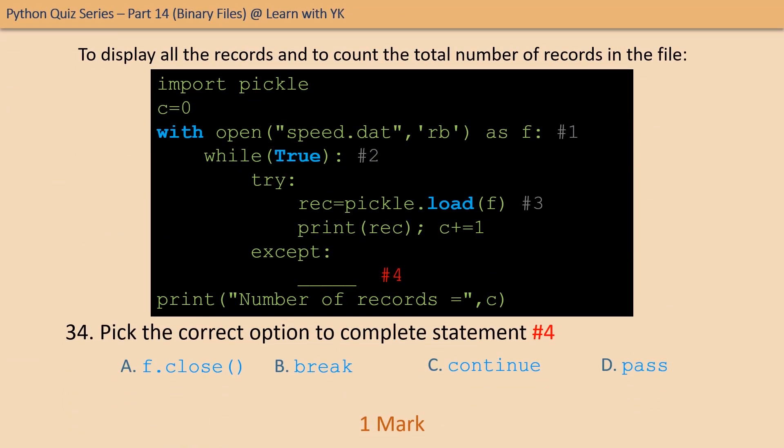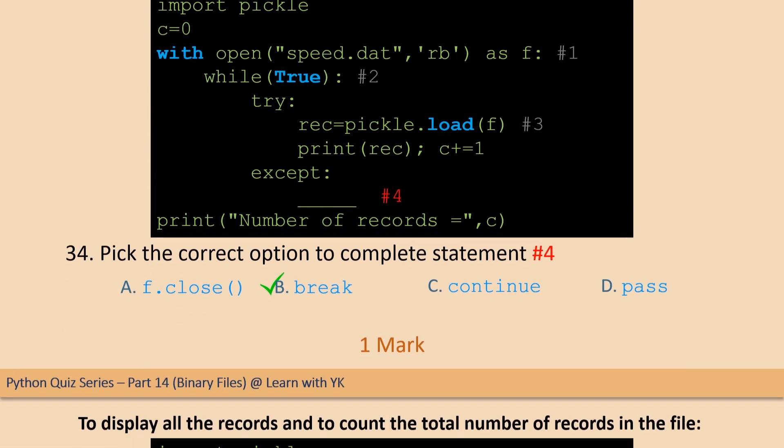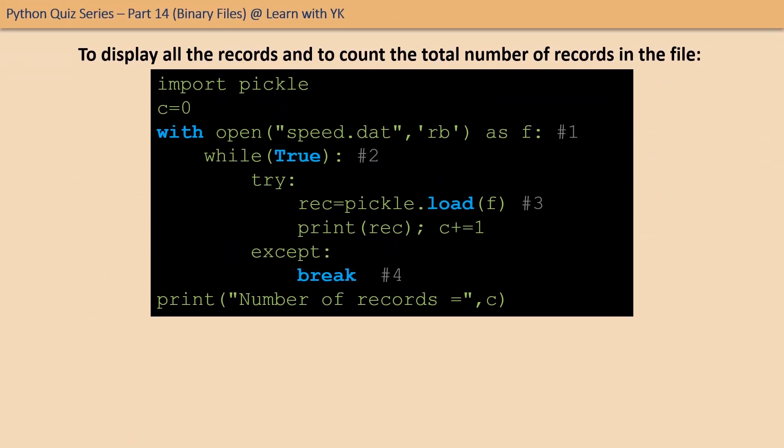Question number thirty-four: pick the correct option to complete statement number four. The correct option is option B. This is the complete code.